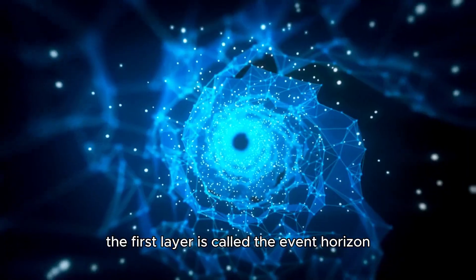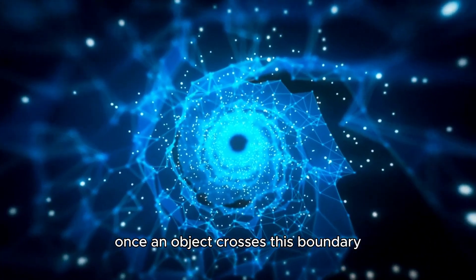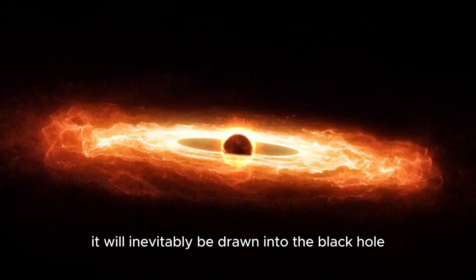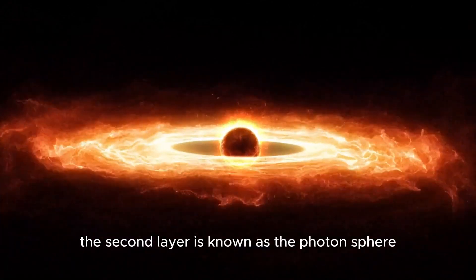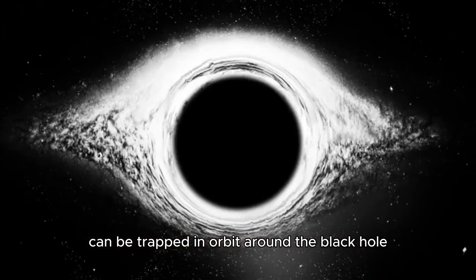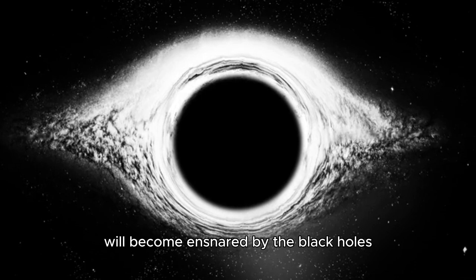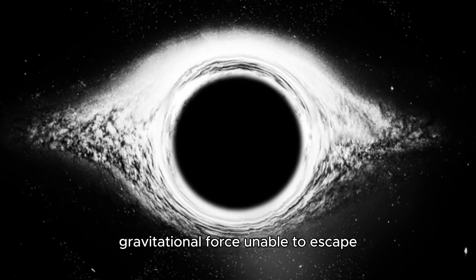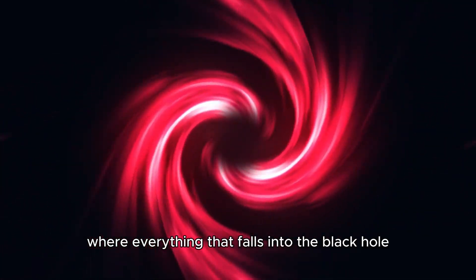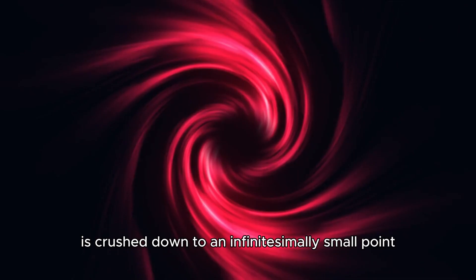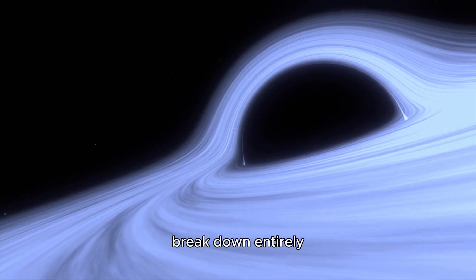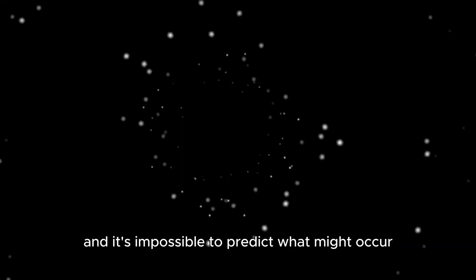In fact, a black hole consists of three distinct layers. The first layer is called the event horizon. Once an object crosses this boundary, there is no turning back. The second layer is known as the photon sphere, a region where light itself can be trapped in orbit around the black hole. Any light entering this area will become ensnared by the black hole's gravitational force, unable to escape. The final layer is the singularity, where everything that falls into the black hole is crushed down to an infinitesimally small point. This is where the laws of physics, as we know them, break down entirely.